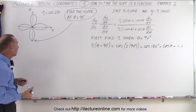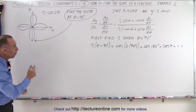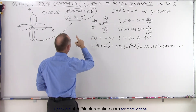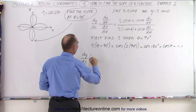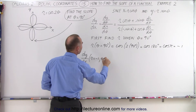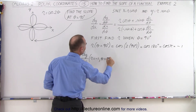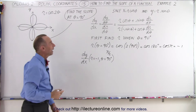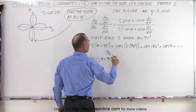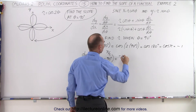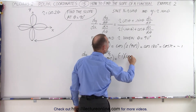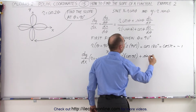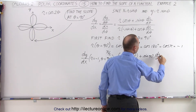Graphically, we can see that the slope should be 0 at that point. Let's see if that's the value we get when we work it out. We're going to plug in the values r = -1 and theta = 90 degrees (which is π/2) into the equation. In the numerator: r is negative 1 times the cosine of 90 degrees, plus the sine of 90 degrees times dr/dθ.